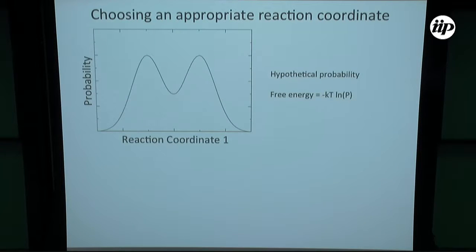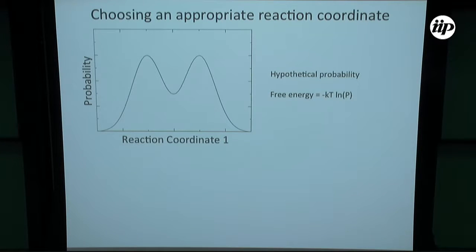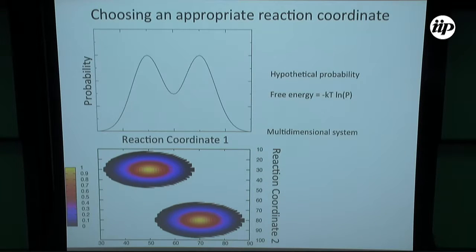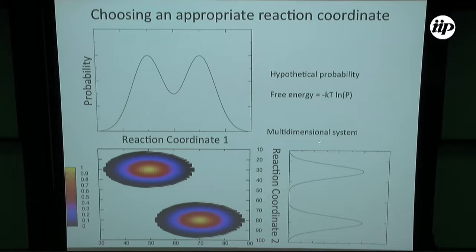What do we mean by an appropriate reaction coordinate? You can imagine that you have a system, you pick a reaction coordinate, and you get some probability distribution. You want to ask: is this probability distribution reflective of the underlying free energy barrier? We often take this probability, take the natural log, and say that's our free energy. Consider a 2D distribution that we simply projected onto one coordinate — that 1D description is consistent with the 2D probability, but if you use the second coordinate, you would get a completely different probability distribution.